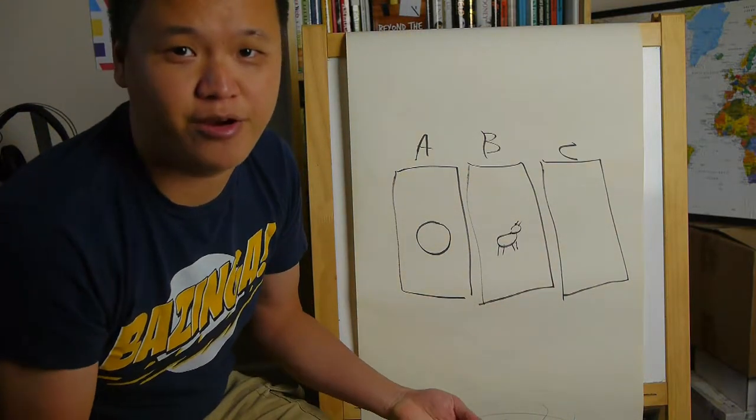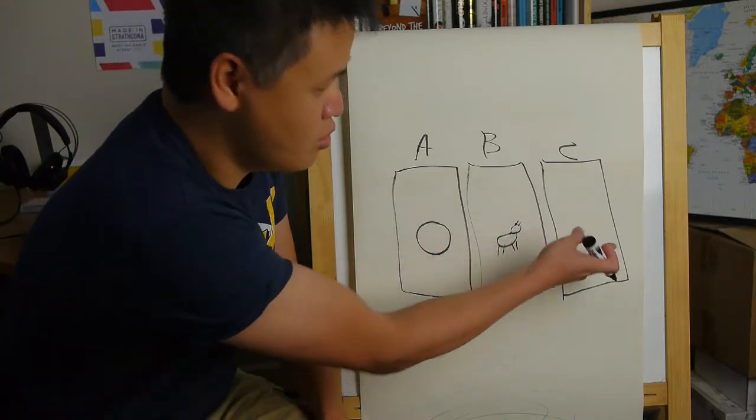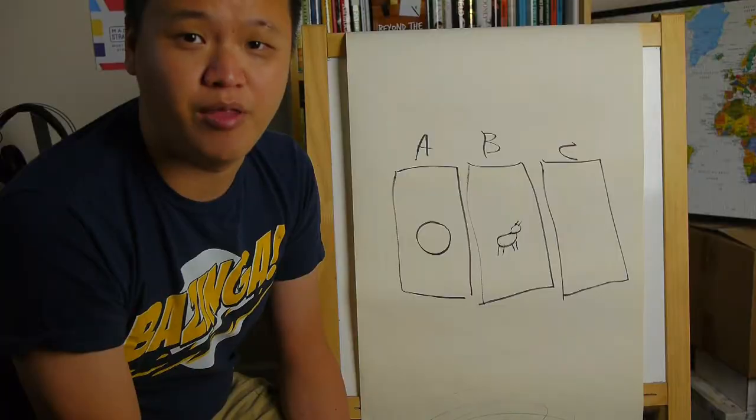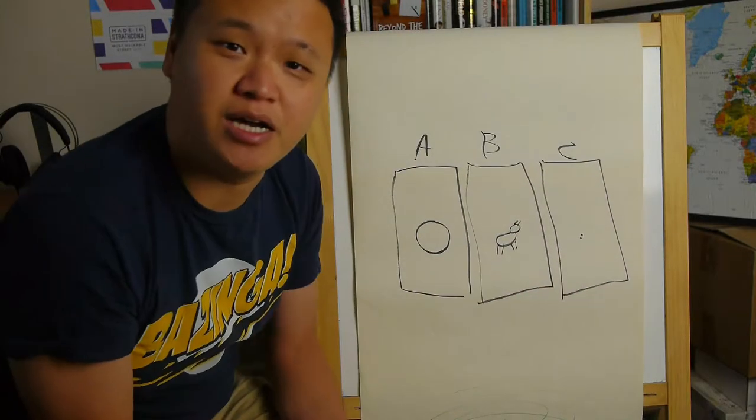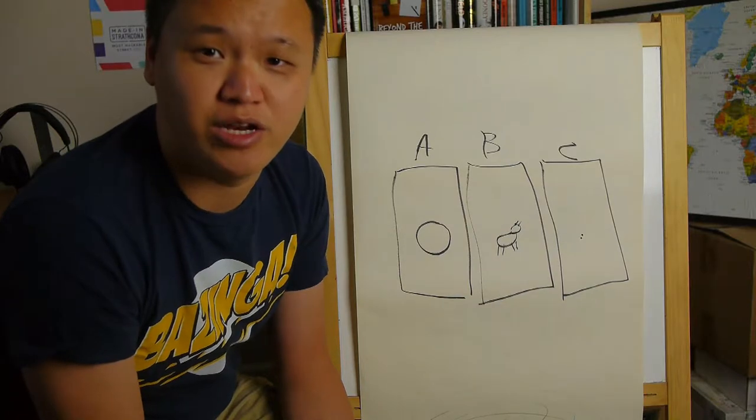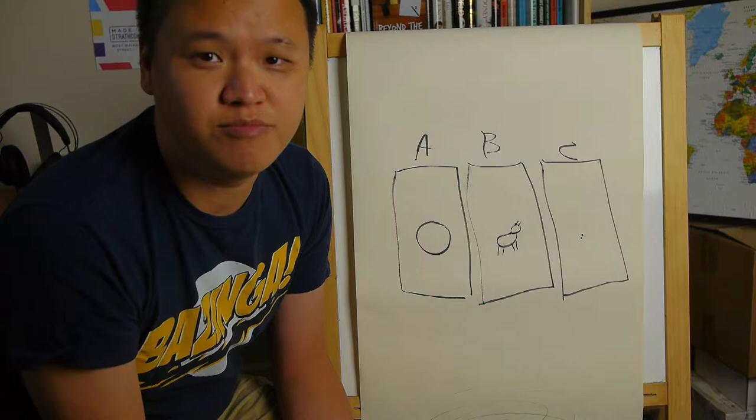The idea there or the obvious answer is it doesn't matter because your chances are still one in three that you're going to get the car. But the real answer is you should definitely switch to C because it doubles your chances at winning the car. But why? That doesn't make any sense at all. Well, let me explain.